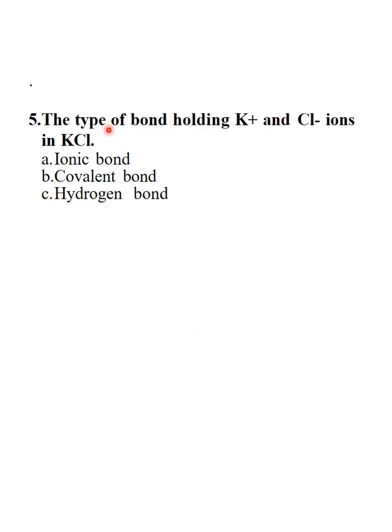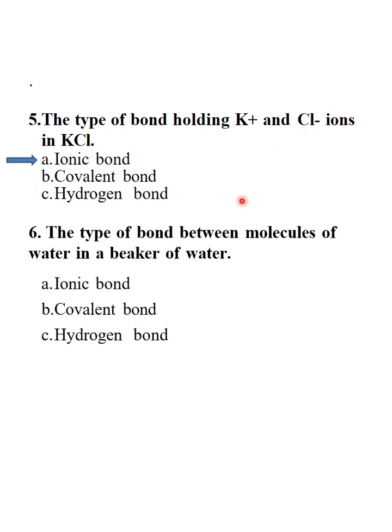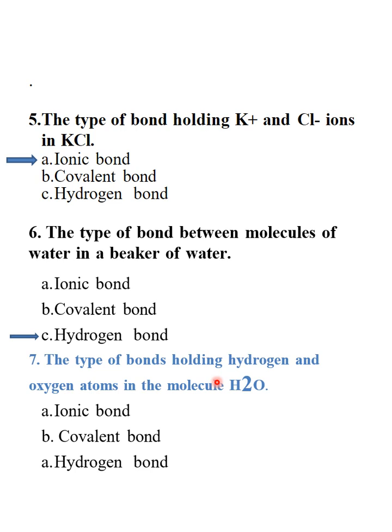The type of bond holding potassium and chlorine ions in KCl is an ionic bond. The type of bond between the molecules of water in a beaker is a hydrogen bond. The bond between the molecules of water is the hydrogen bond. And the type of bond holding hydrogen and oxygen atoms in the molecule of water is a covalent bond.